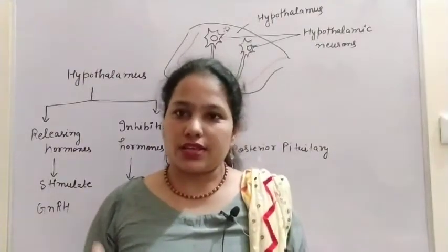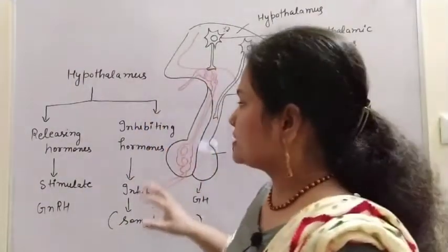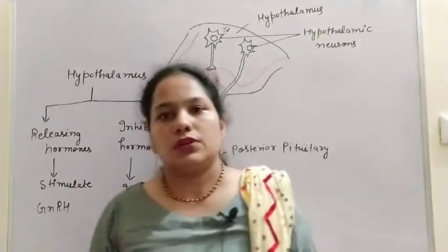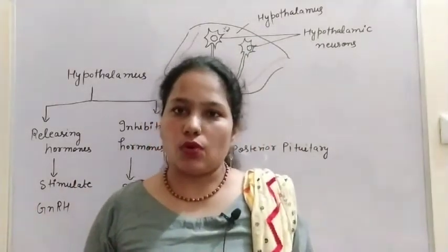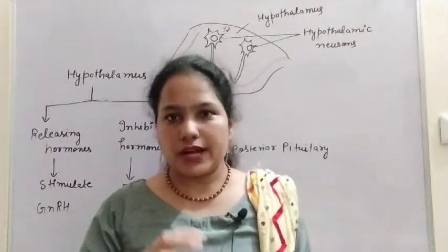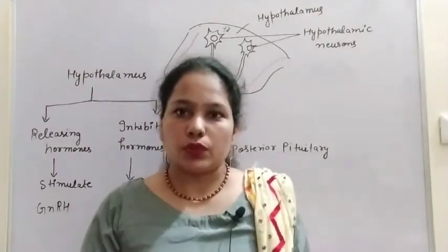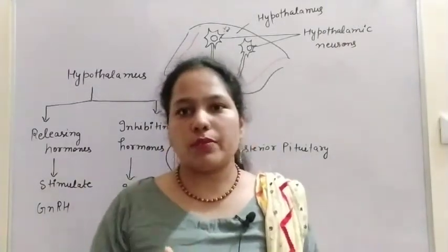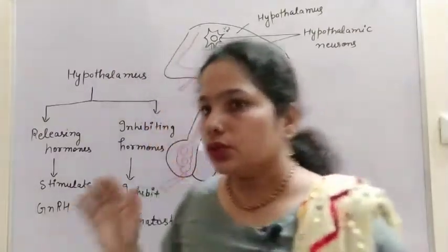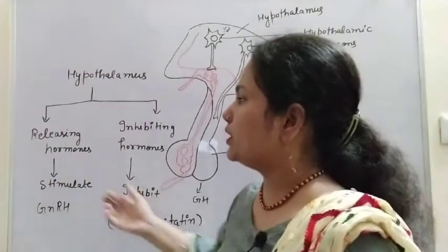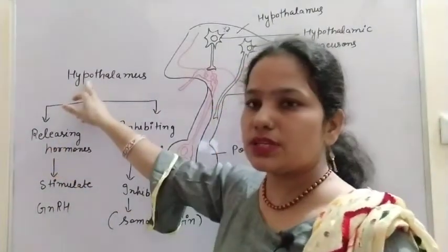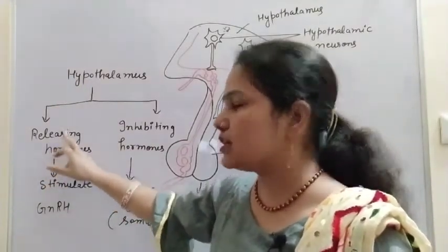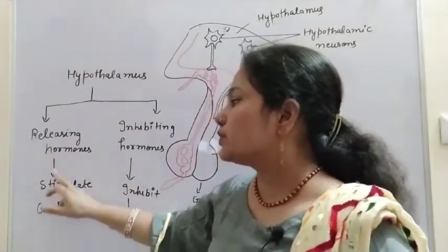So it is the master of master gland. This gland releases only two types of hormones: the releasing hormones and the inhibitory hormones. The releasing hormones secreted by the hypothalamus stimulate the pituitary gland.